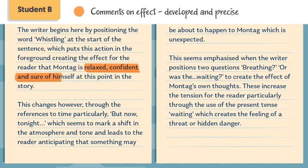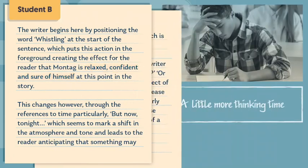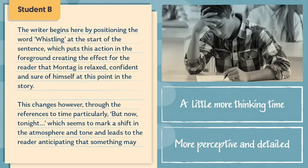For example, pointing out that Montag isn't just relaxed but also sure of himself, which shows the student is thinking more deeply about the impact of 'whistling'. So by taking a little more thinking time, you can see that the student here has been able to present a more perceptive and detailed answer, and secure themselves a level 4 on the mark scheme.